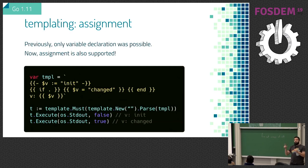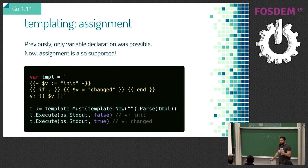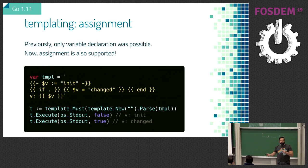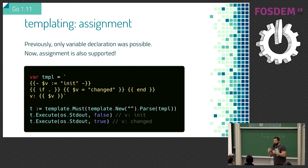You can now assign variables in templates. Previously you could only declare variables but not change their values; now you can. In this example, the expression `$v = change` is something that wasn't possible before. I find it quite useful for debugging templates — you can have something at the beginning that says 'if debug, change these variables to something else.'